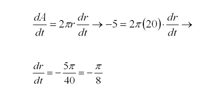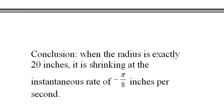So what's our conclusion? Down here. Conclusion, when the radius is exactly 20 inches, the radius is shrinking at the instantaneous rate, at that instant, of negative pi over 8 inches per second.